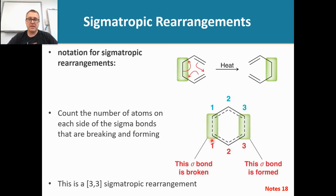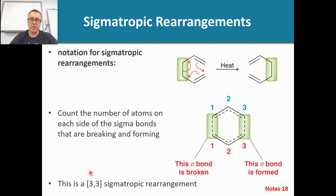We have some notation that tells us what type of sigmatropic rearrangement occurs. The one shown at the top right corner is a 3,3 sigmatropic rearrangement, and we need to be able to figure out how that notation works — that's what I'm going to show you on the whiteboard.